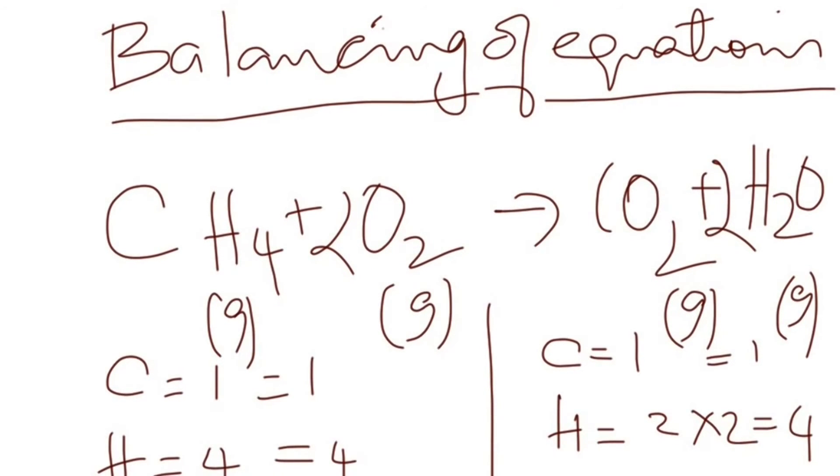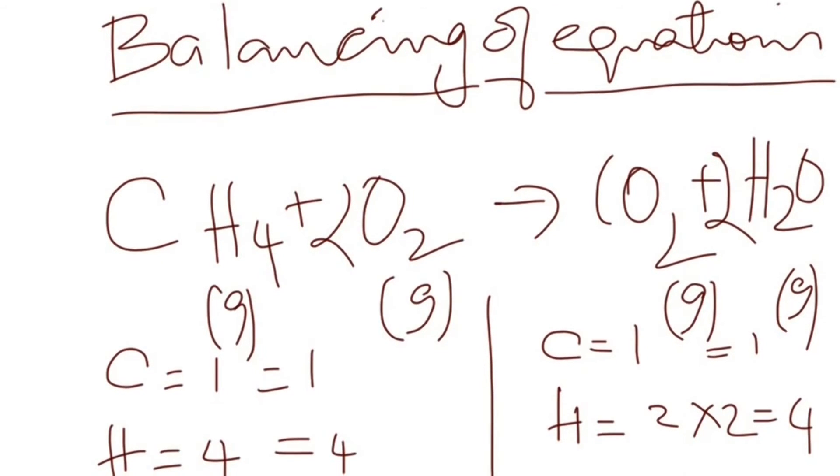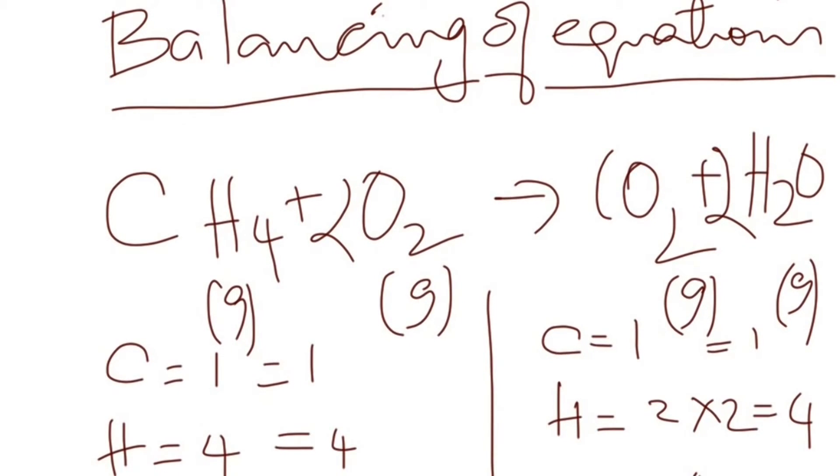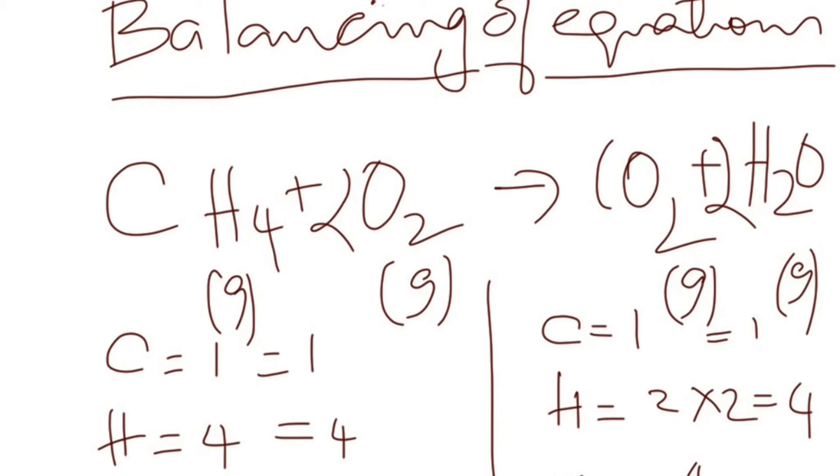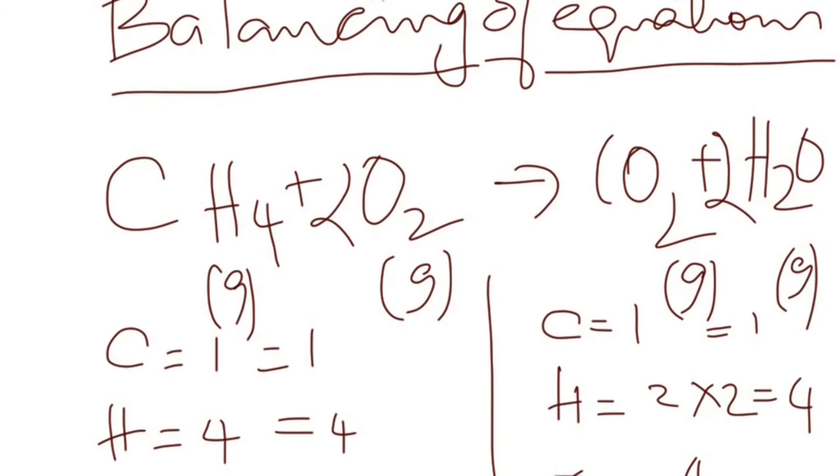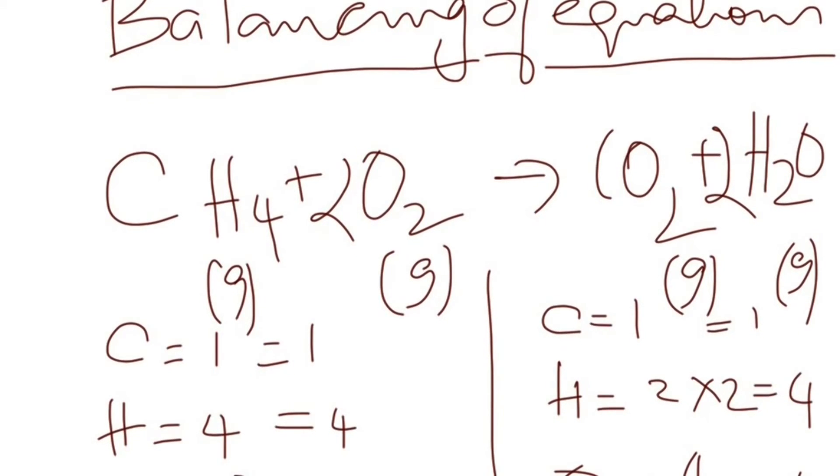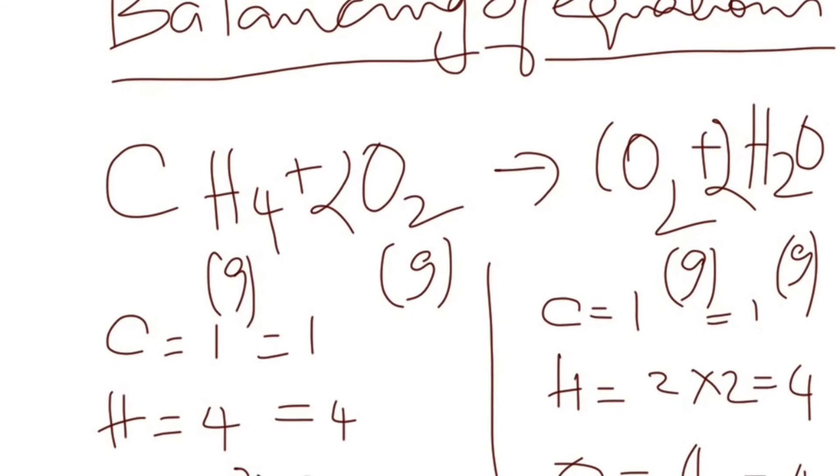Now if you look at the number of carbon atoms, there is one on the left and one on the right. So we don't have to make any changes there. For hydrogen, we have four hydrogens on the left and two hydrogens on the right. So what we are going to do is add a coefficient for water molecule, which is two. So we have totally four hydrogen atoms.